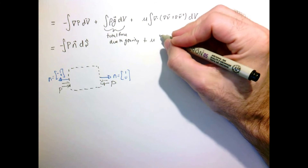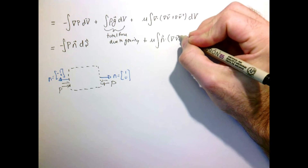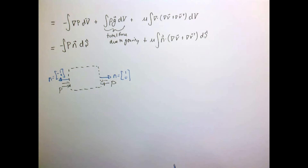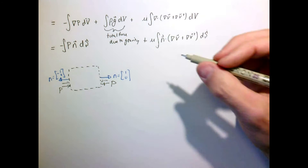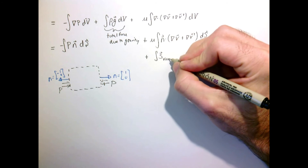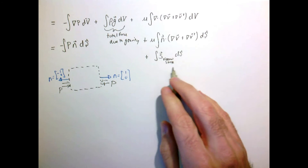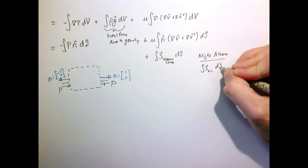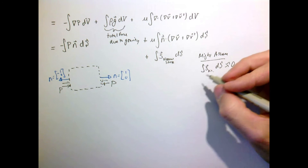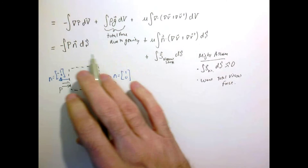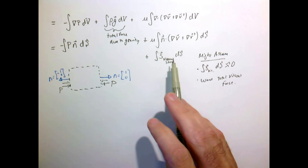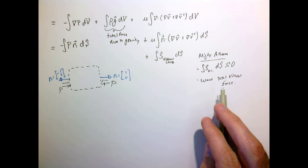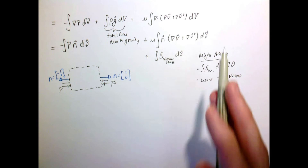Likewise, the viscous term can be converted to a surface integral as n dotted with our rate-of-strain tensor — the velocity gradient tensor plus its transpose — integrated over the surface. This term is more complicated, so we often think of it simply as integrating the viscous stress vector over the surface. In practice, we either assume viscosity is small and ignore it, or we use all other known terms to calculate the net viscous force. With the control volume approach, we don't actually know the velocity field unless we've assumed it.